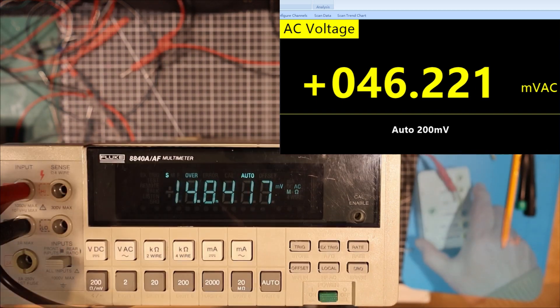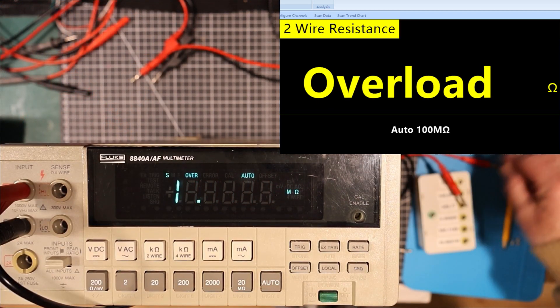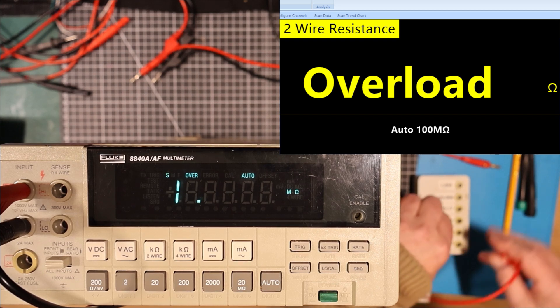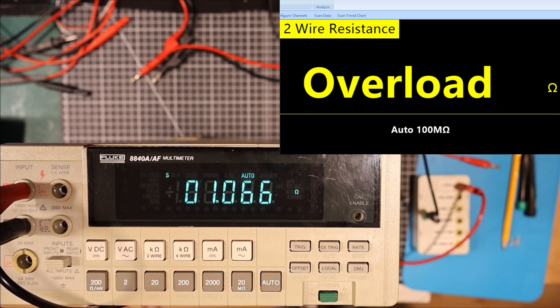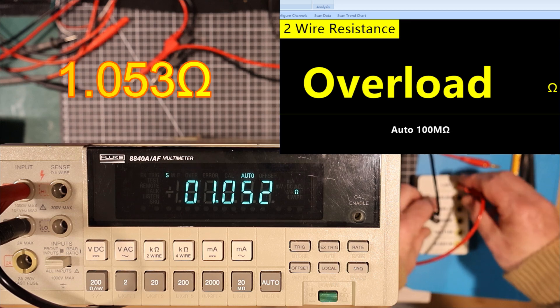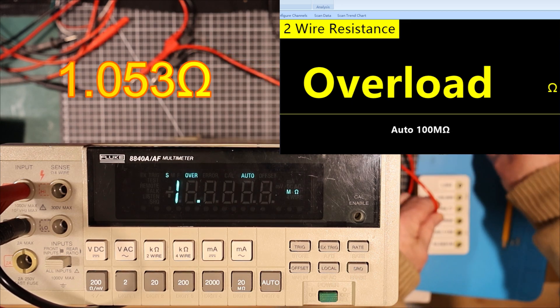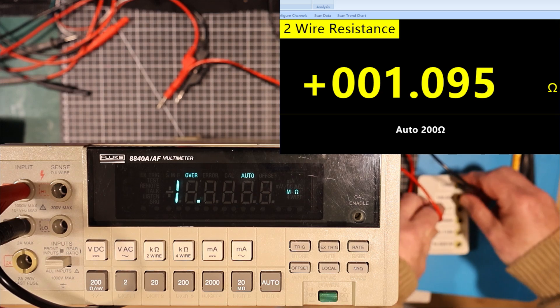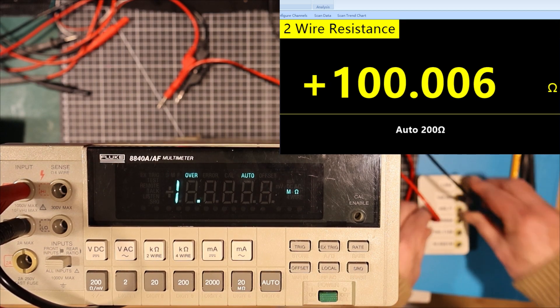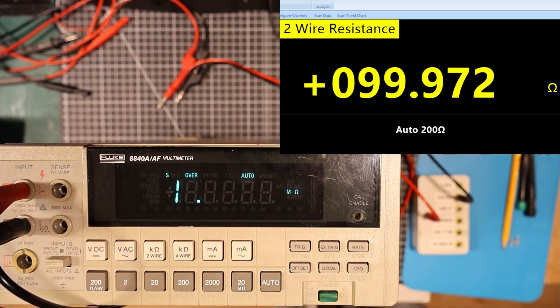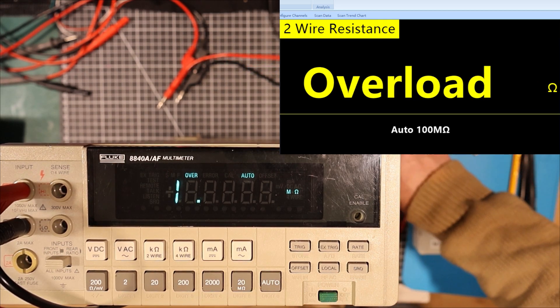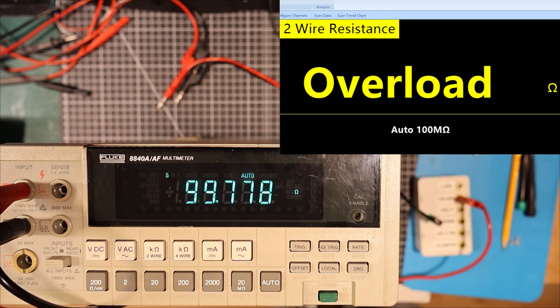And let's try some ohms. So these are the leads for the Signalent. These are the leads for the Fluke. Let's try this 1.053 ohm resistor. 1.53. Let's try the Signalent. Signalent's measuring considerably higher. What's the Signalent say about the 100 ohm resistor? 99.972. And the Fluke. 99.77. Pretty good agreement.